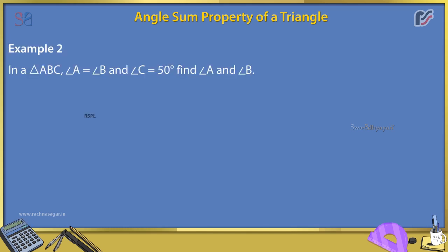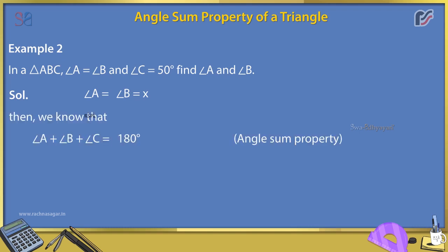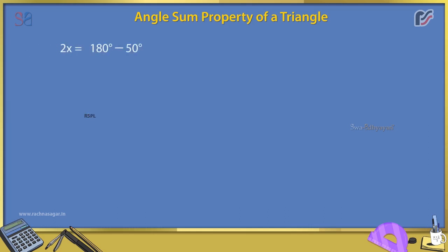Example 2: In triangle ABC, angle A = angle B and angle C = 50°. Find angle A and angle B. Solution: Let angle A = angle B = x. Then x + x + 50° = 180°, so 2x = 130°, giving x = 65°. Therefore, angle A = angle B = 65°.